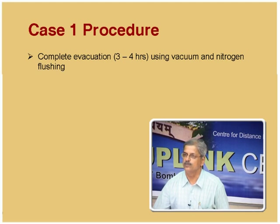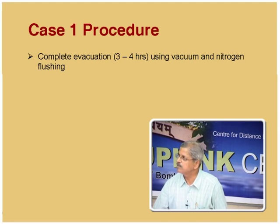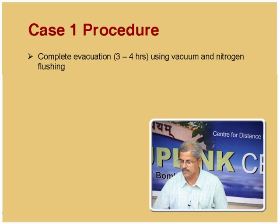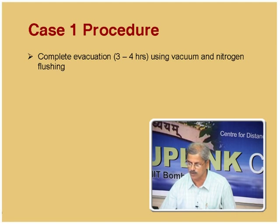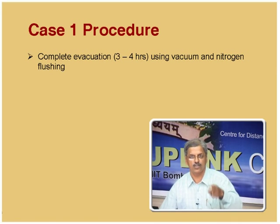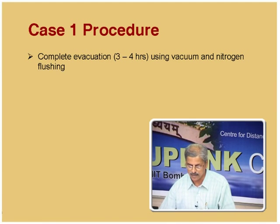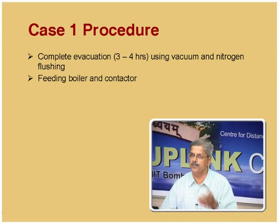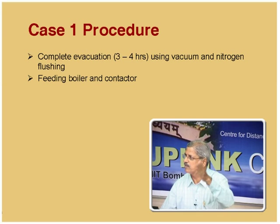For this case I have given some indication of the procedure to show the kind of effort and time involved, and the important things to be taken care of. The system has to be completely evacuated using a vacuum pump — typically down to 10⁻³ or 10⁻⁴ mm Hg pressure, which is good enough for most situations. This generally takes anywhere between 3 and 4 hours. You have to evacuate, flush with nitrogen, evacuate again, flush again repeatedly to ensure nothing unwanted is present. The next important step is feeding the boiler and contactor with the mixture to be used for taking vapor-liquid equilibrium data.